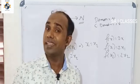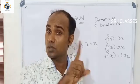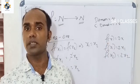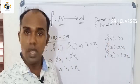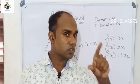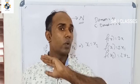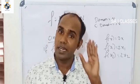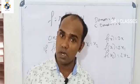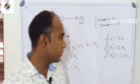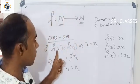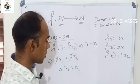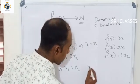This satisfies the first condition. If two numbers have the same image, those two numbers must be equal. That is the mathematical requirement: x1 = x2. Therefore it is one-to-one.